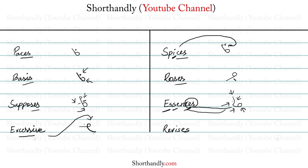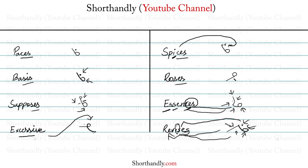The next and last word is REVISES. REVISES will be written like this. This is our R, then we have a light dot to represent our E vowel, then we have a dark circle which is V, then we have the I diphthong as we have the I sound here, and then simply the large circle which represents our SES. And that's our word REVISES.